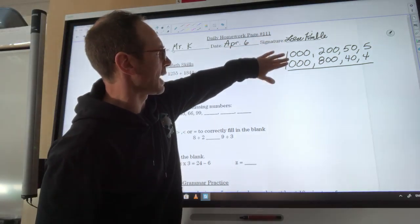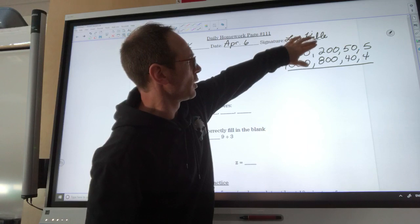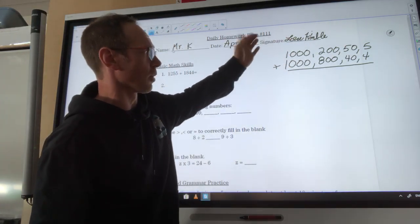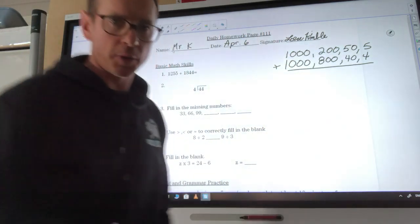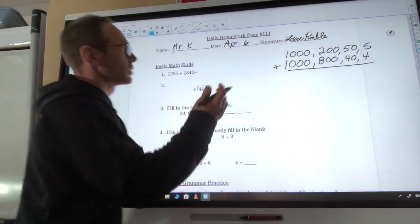So if I look right here, I've got a thousand and a thousand, that's 2,000. And 200 and 800, that's going to be a thousand more. So I know my answer is going to be somewhere around 3,000. So let's do the work now.